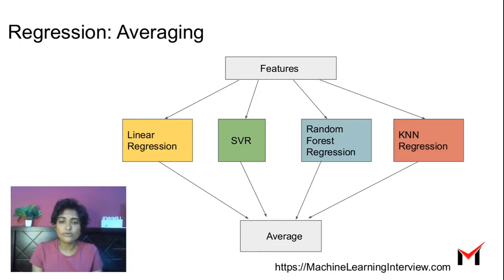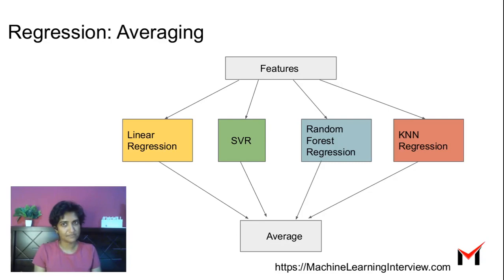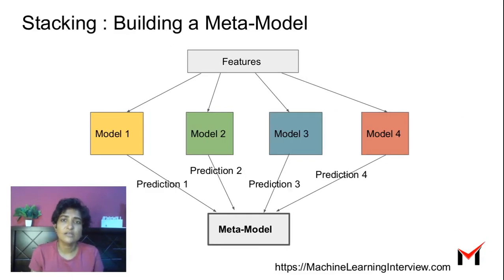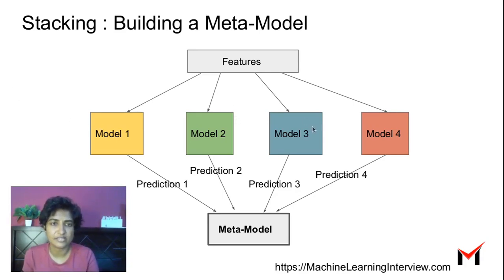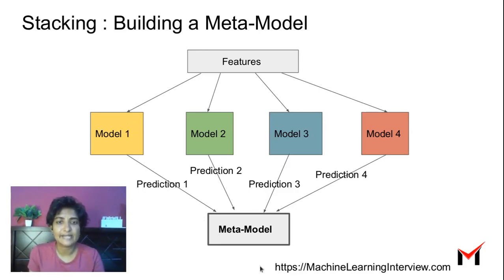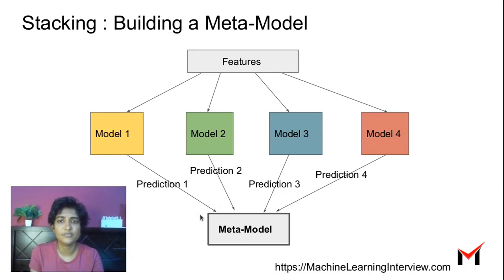What if we want to go one step further and do a weighted average, giving a different weight to each model? One way to learn these weights is stacking, which involves building a meta model. For a regression problem, we learn four different models from the training data, then build a meta model whose input features are the predictions from each of those individual models given the same input point.